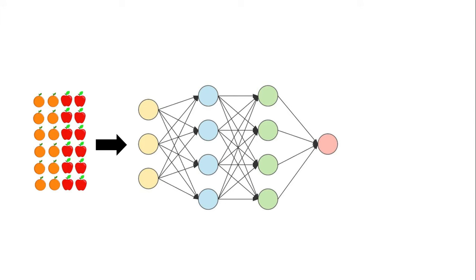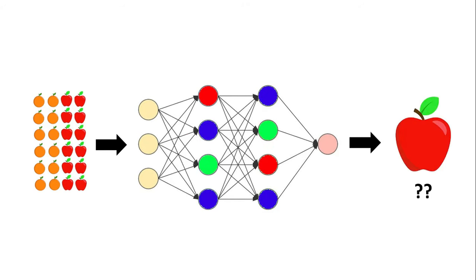For example, if we pass a bunch of images of apple and oranges, this network will try to recognize patterns in these images and based on this pattern stored, it will make the new predictions with the image it has never seen before.